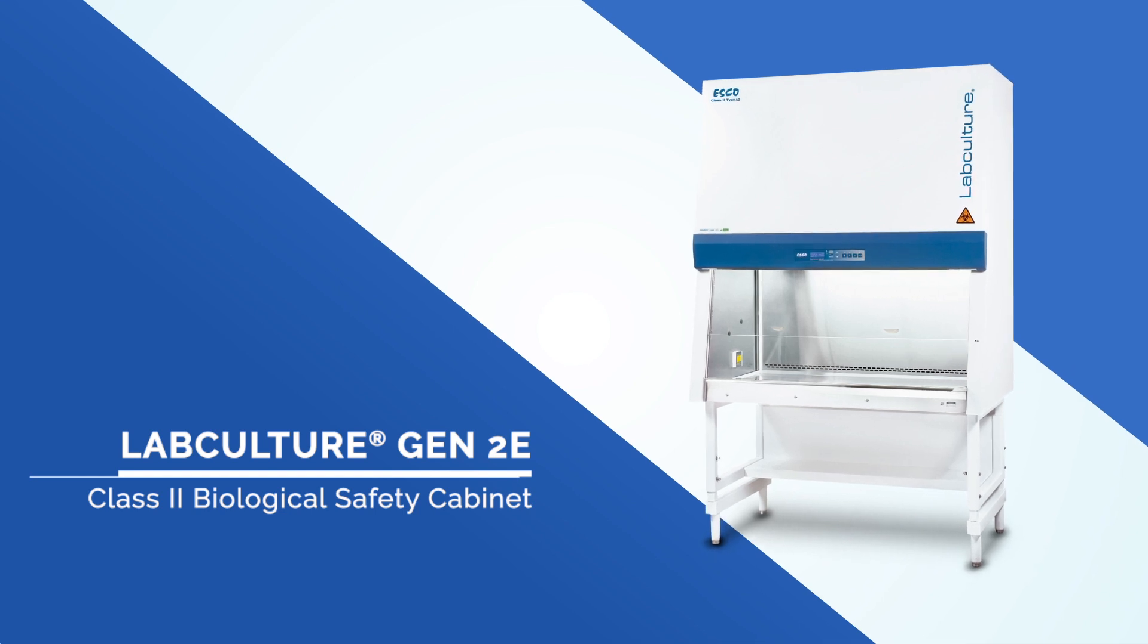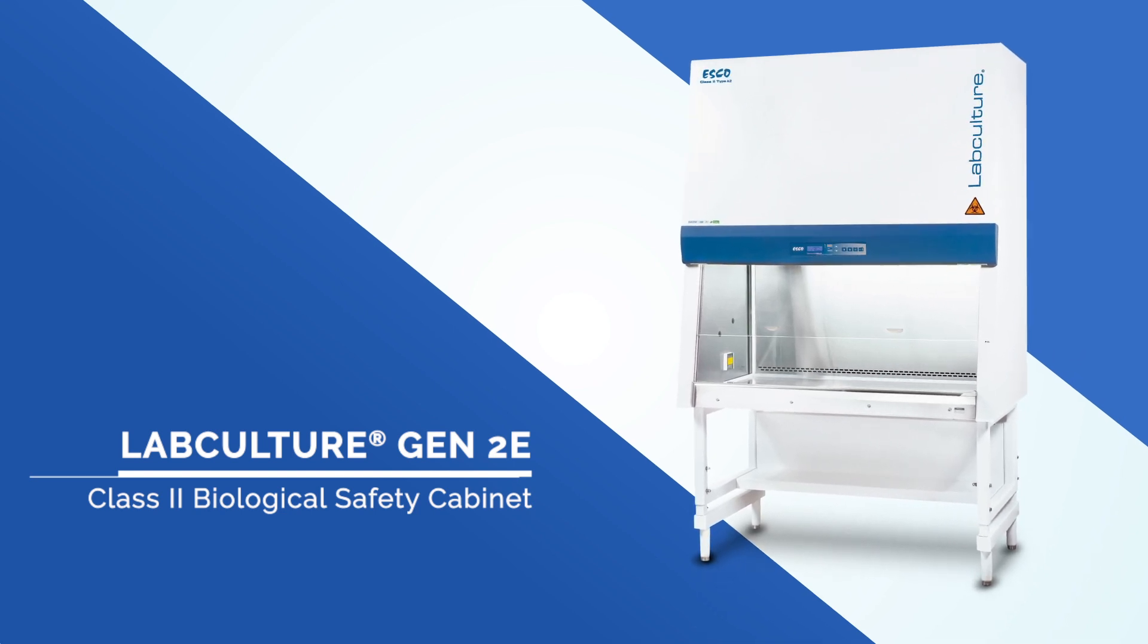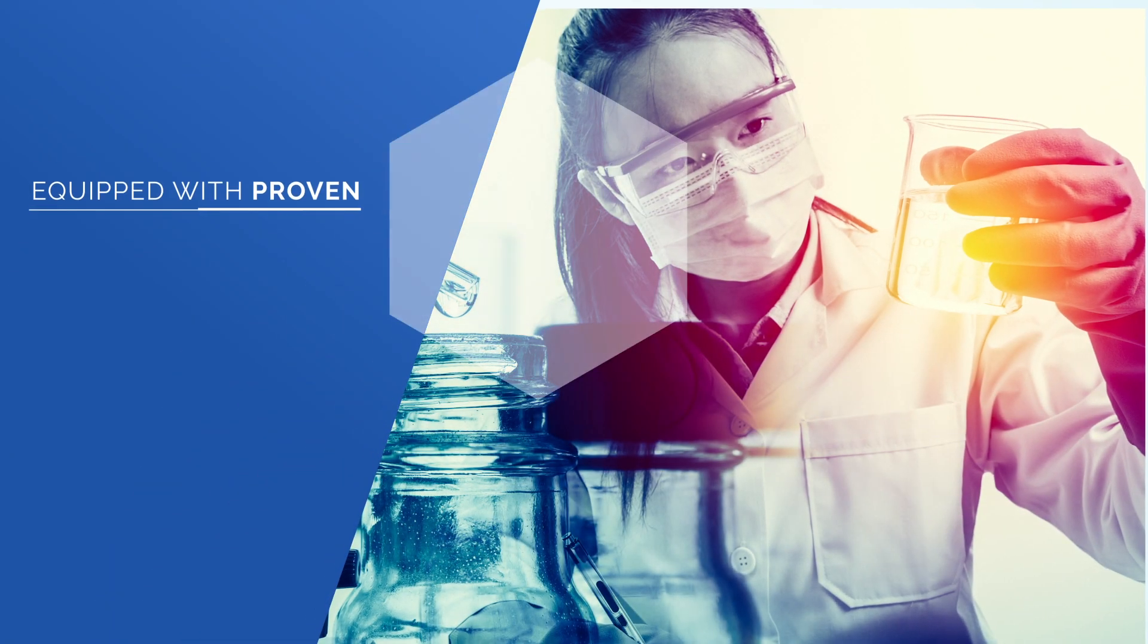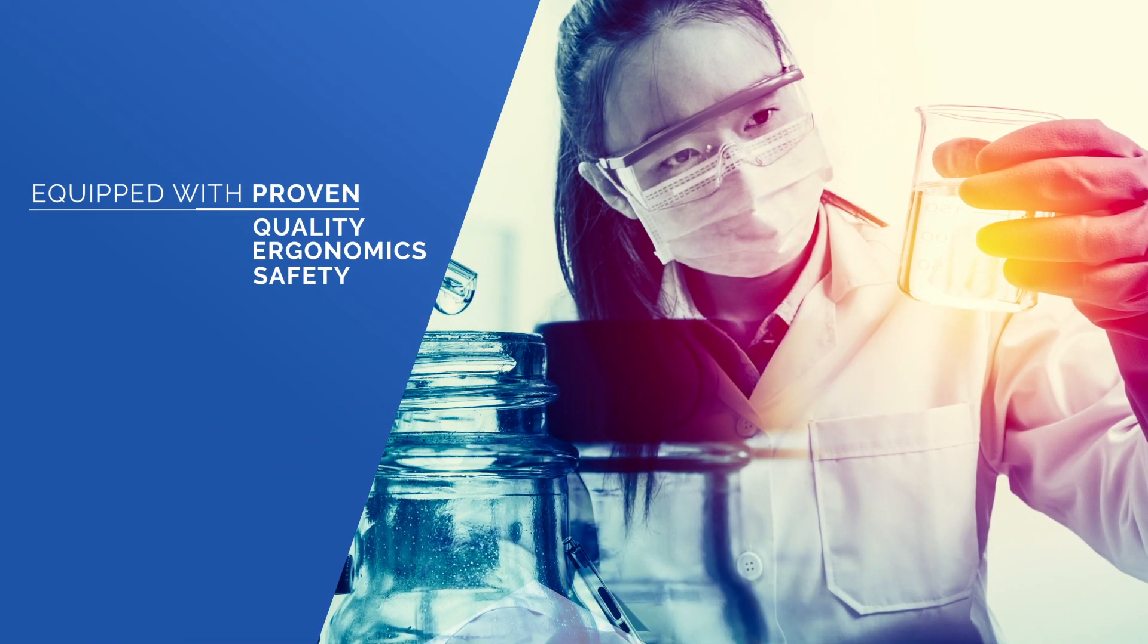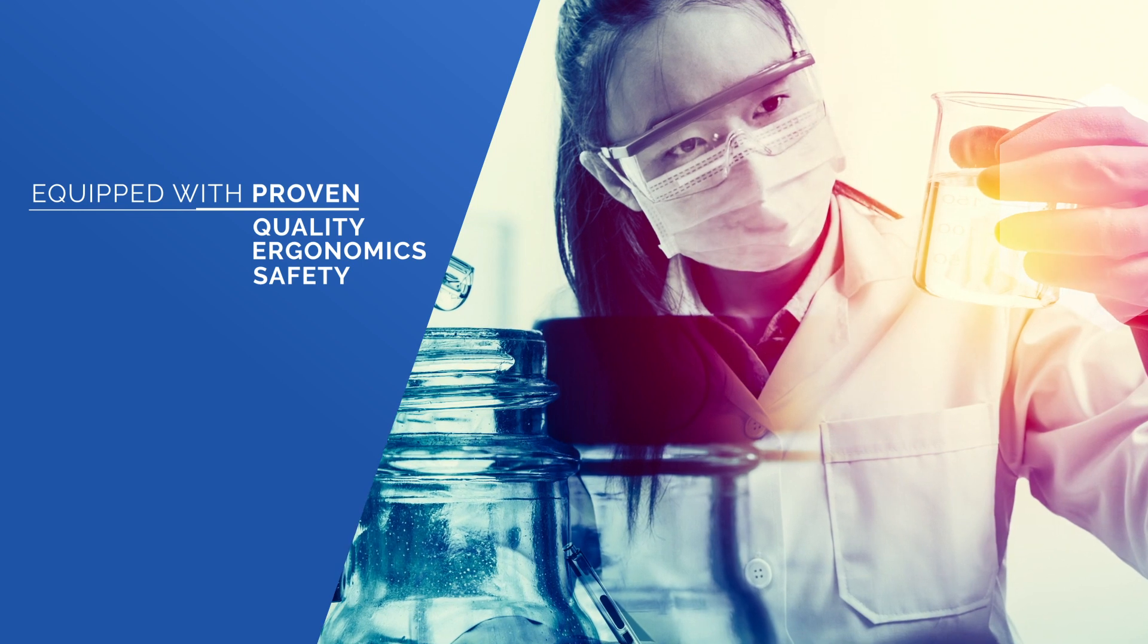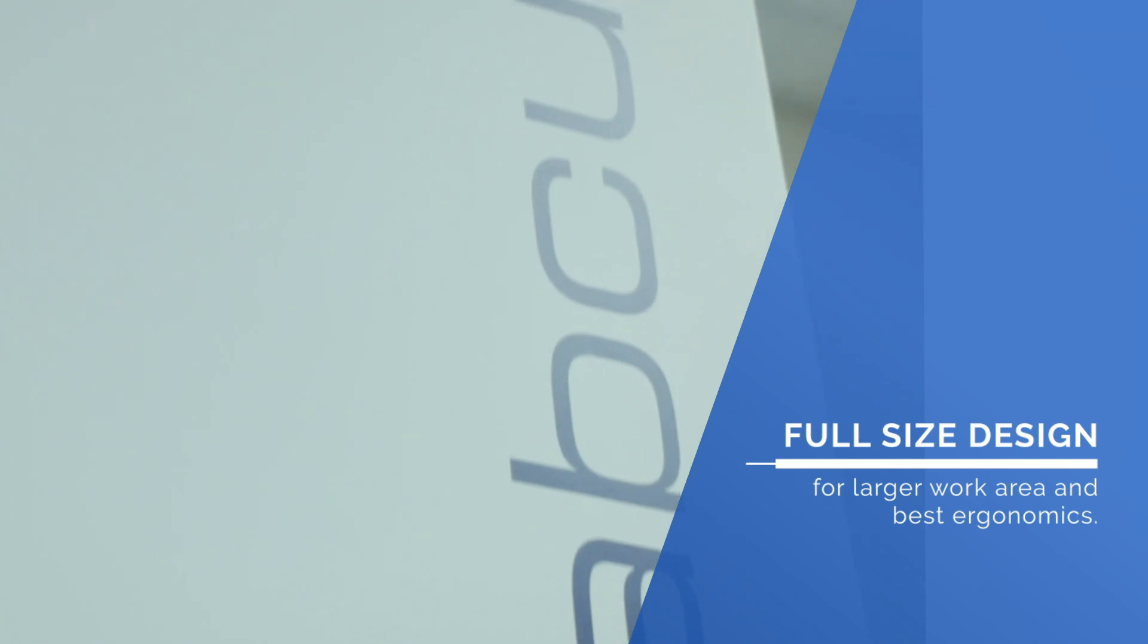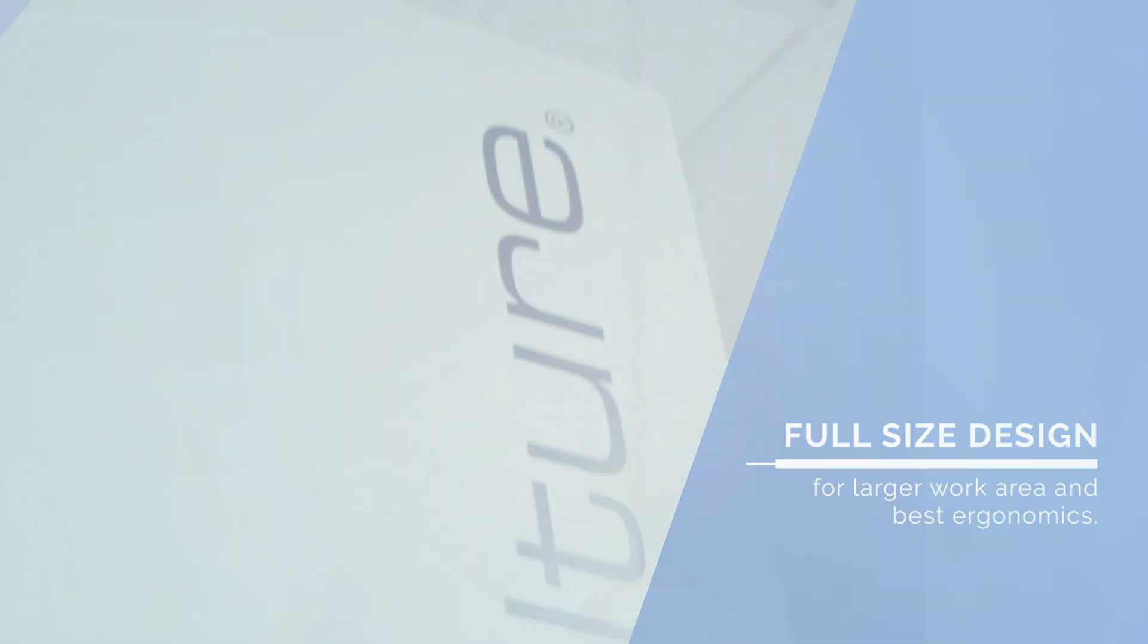LabCulture Gen2E Class II Type A2 Biological Safety Cabinet is equipped with features of proven quality, ergonomics, and trusted to provide user, product, and environment protection. With its full-size design, it has larger work area and best ergonomics.